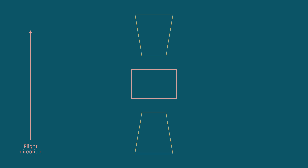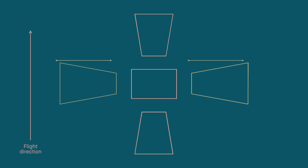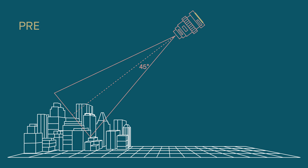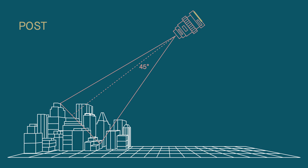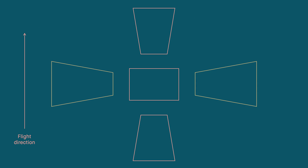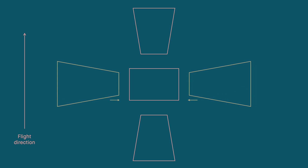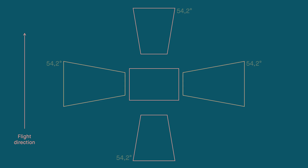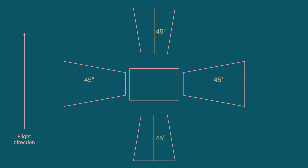Now, here is where it gets interesting. We orient the oblique cameras on the right and left in portrait mode so that the longer side of the rectangular image covers more ground across the flight strip for higher efficiency. Plus, by making a small sensor shift of about 1800 pixels, we gain more coverage towards the nadir point. This way, the left and right oblique images come closer to the nadir footprint, so the outer image borders of all four obliques are laid out at the same 54.2 degrees. The optical axis for all obliques remains at 45 degrees. This demonstrates efficiency not just in the flight itself, but also in the optimal use of image content.